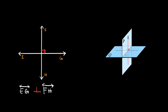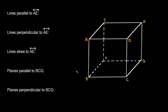Let's revisit skew lines with perpendicular planes. If I draw a line that lies on plane Q and then we have a separate red line L, are these two lines skew? In this case yes, because they're on two completely different planes and run in two different directions.